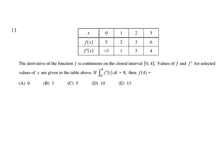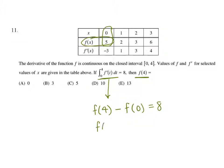For number 11, we're integrating the derivative, which undoes everything, leaving us with f at 4 minus f at 0 equals 8. Since f at 0 is given as 5, we have f at 4 minus 5 equals 8, so f at 4 equals 13. That's answer choice E.